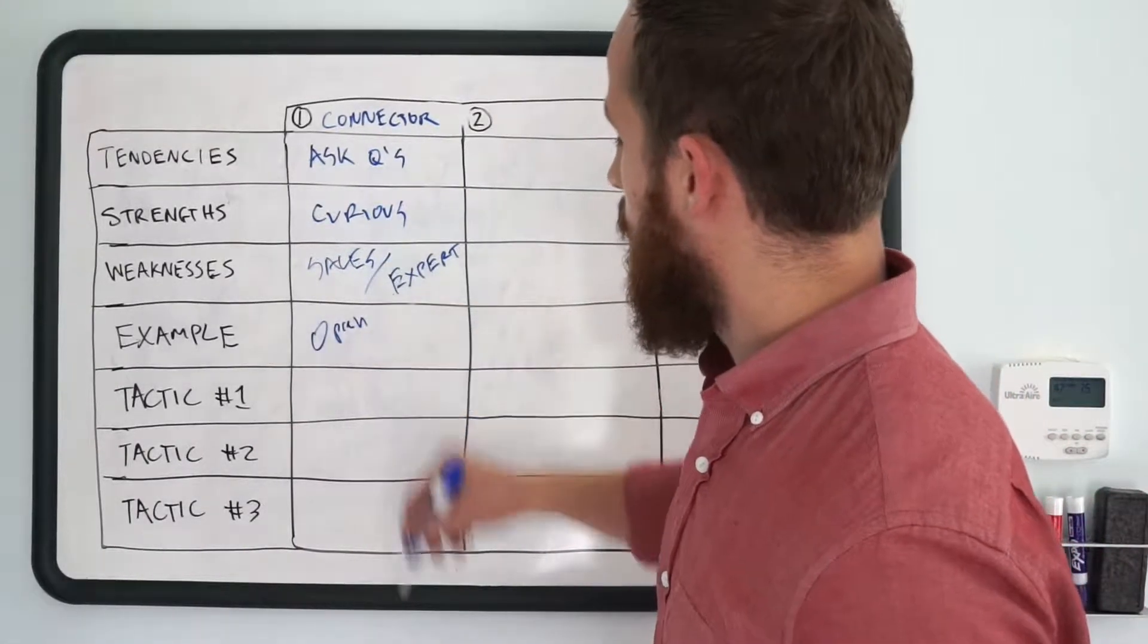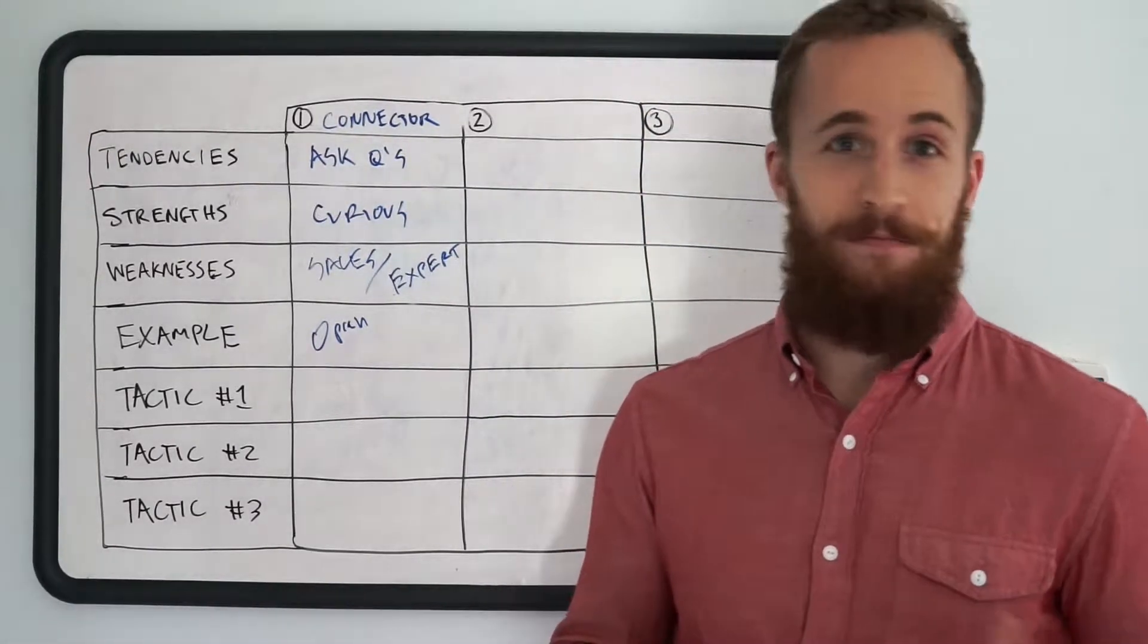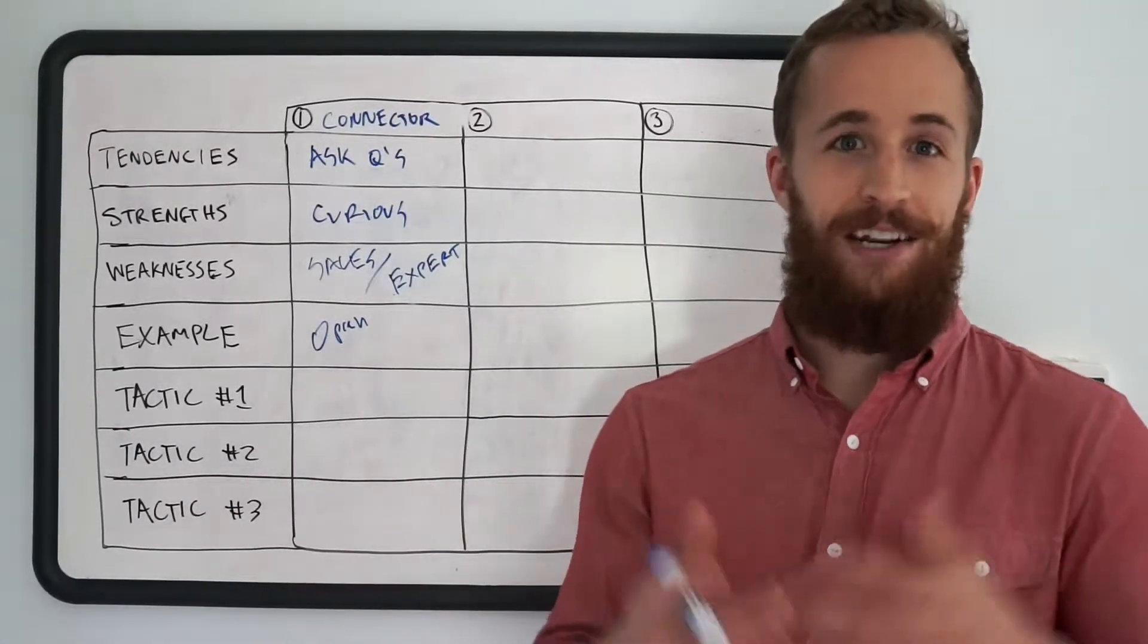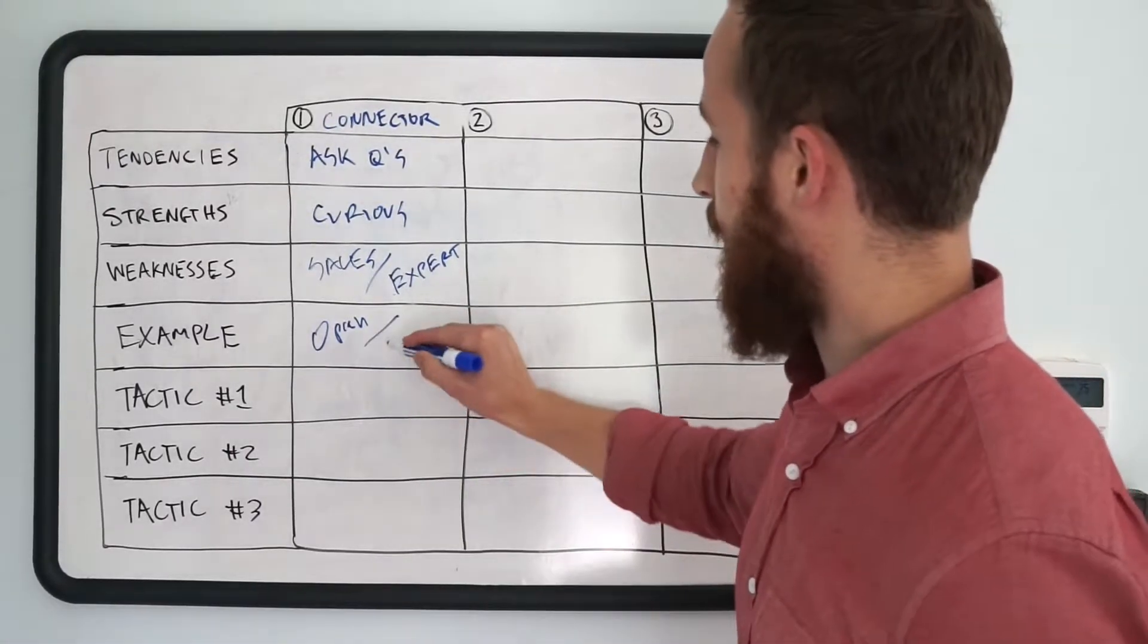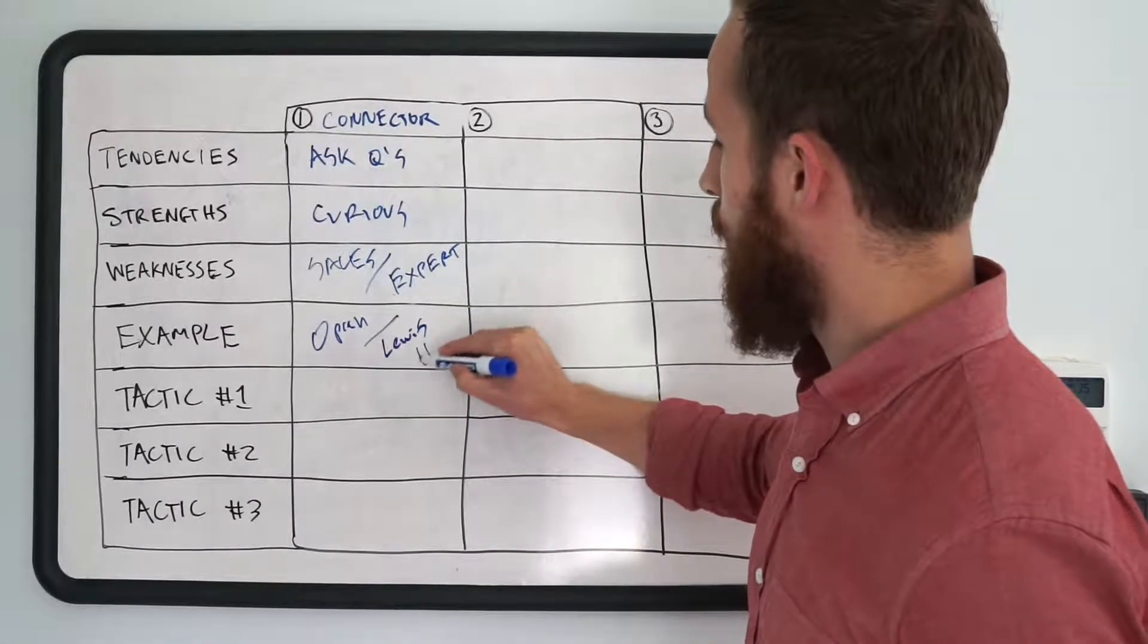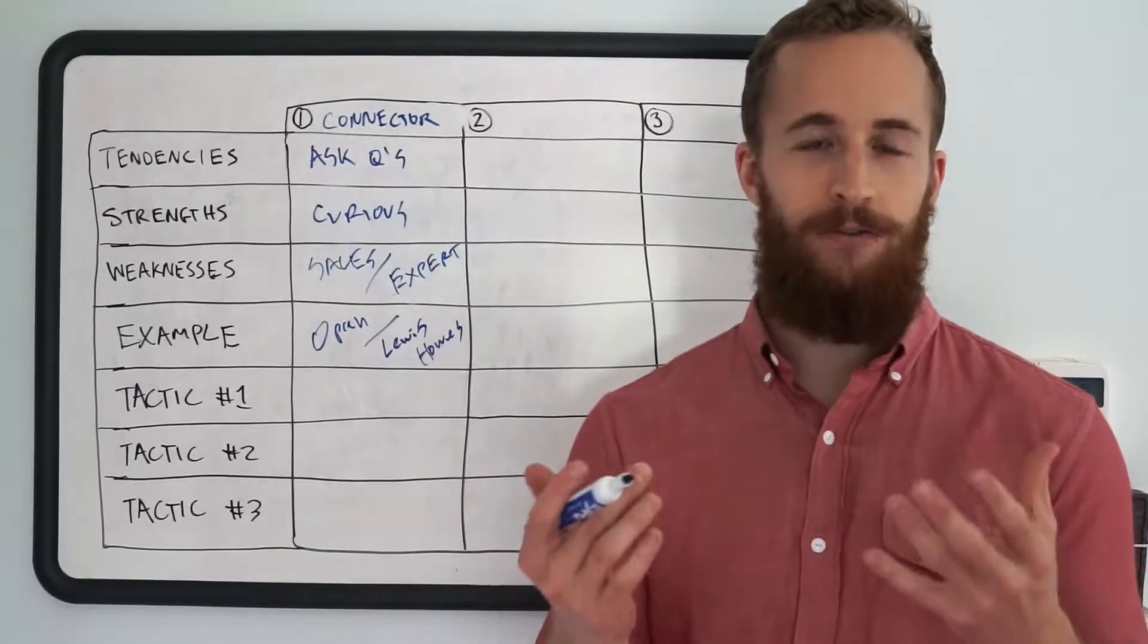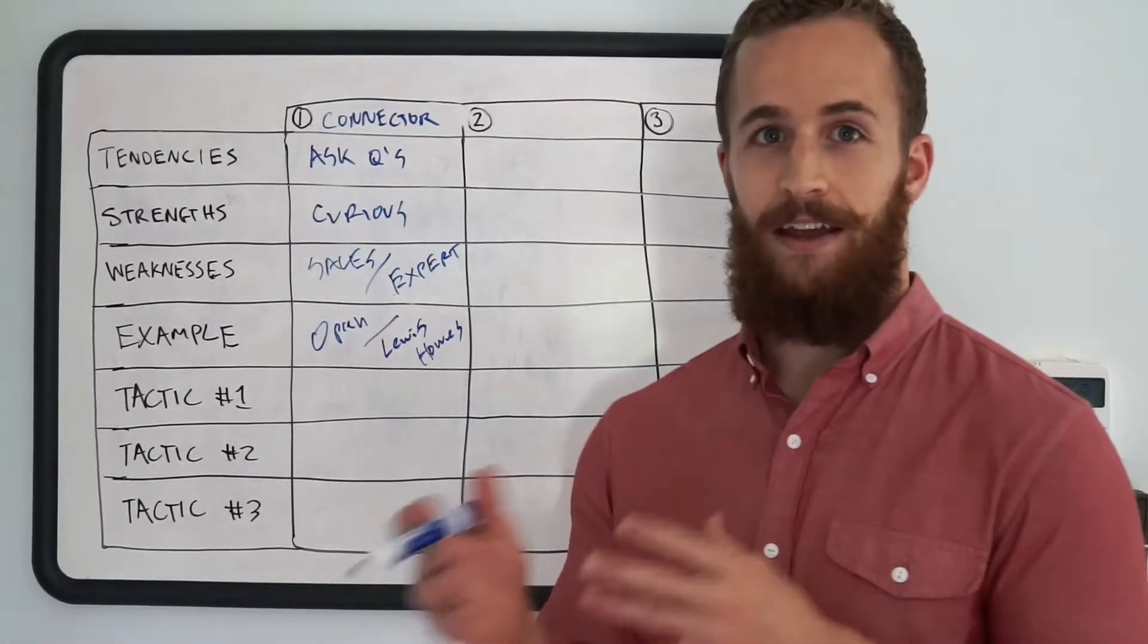An example of a connector is Oprah. Alright, so one example is Oprah, and obviously she's built her empire mostly just being a connector, having people on her shows to interview, and connecting people with products and services that she thinks are great, having her book club, etc. So, Oprah's a good example of someone who's been very successful as a connector. Also, someone who's more in the coaching industry would be Lewis Howes. You know, I think he has strengths in all these three archetypes, but clearly he's a connector. He has the podcast School of Greatness, and he's built a platform on having other people on his show to share their expertise.